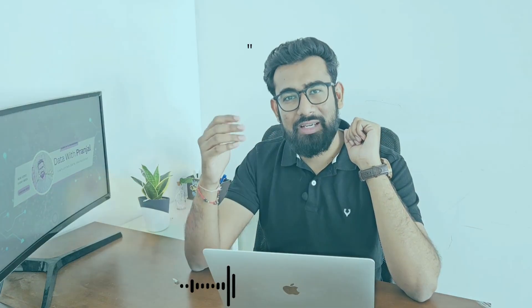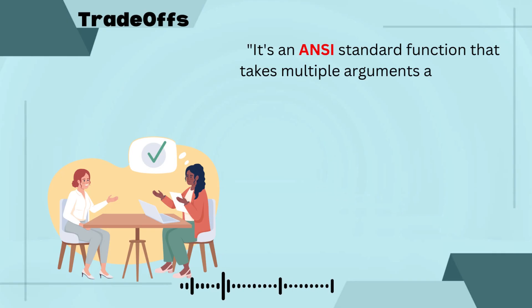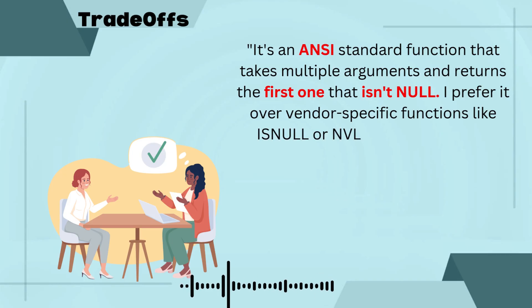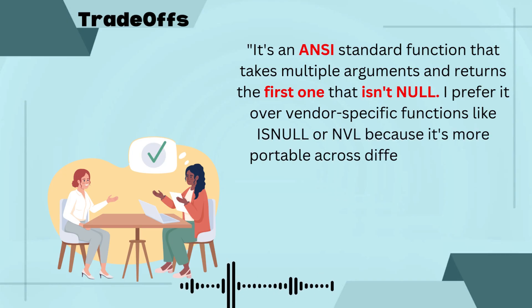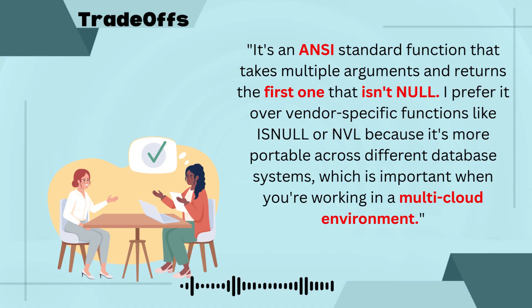Now give the technical definition. COALESCE is an ANSI standard function that takes multiple arguments and returns the first one that isn't null. I prefer it over vendor-specific functions like ISNULL or NVL because it is more portable across different databases, which is important when you are working in a multi-cloud environment.